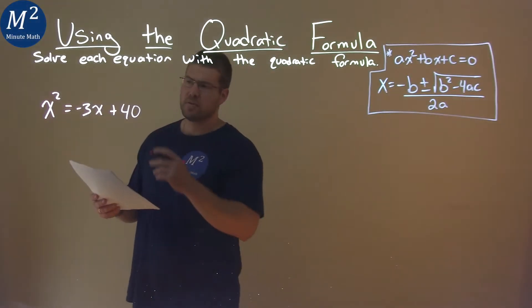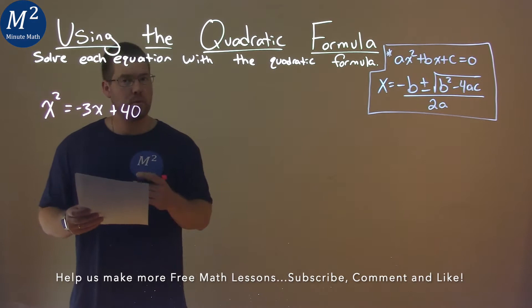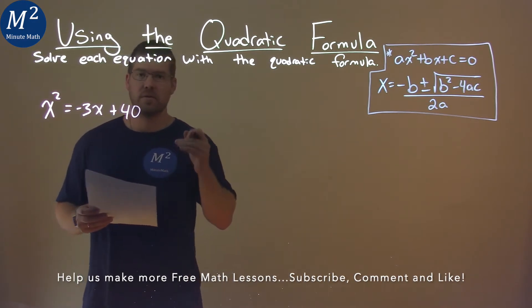We're given this problem right here, x squared equals negative 3x plus 40, and we need to solve this using the quadratic formula.